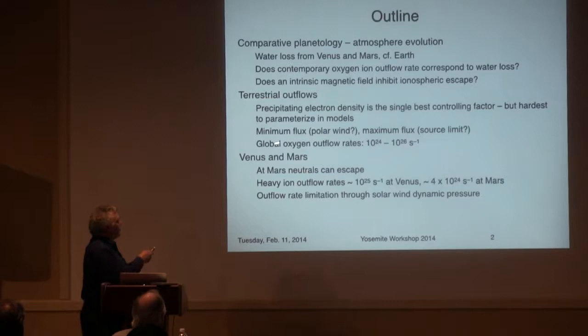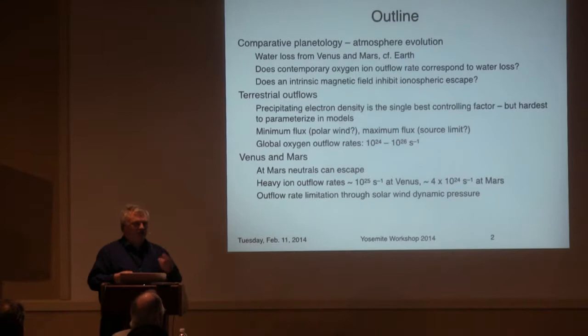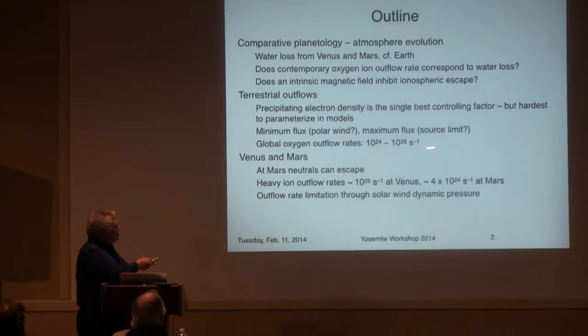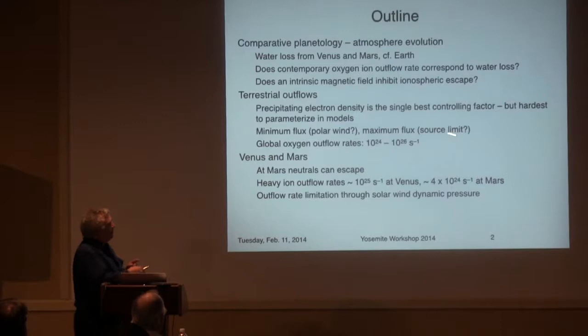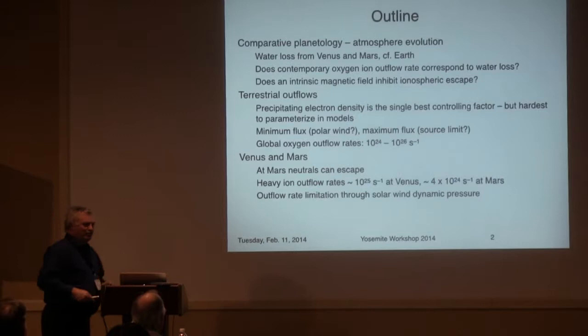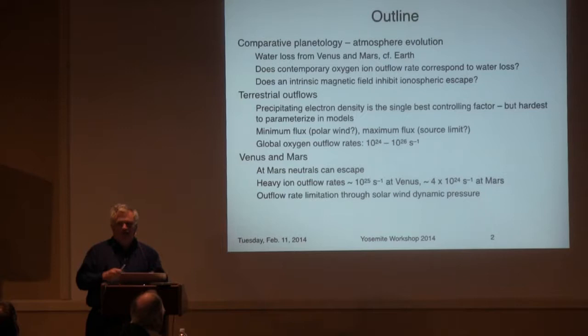There's also a minimum flux, which I think is the polar wind, and a maximum flux which may be a source limit. From Yao and Andre's review paper, the global outflow rate is 10²⁴ to 10²⁶ per second. I average that to 10²⁵ because I like to keep things simple. Something of the order 10²⁵ per second is the oxygen outflow rate averaged over the northern and southern polar ionospheres for the Earth.